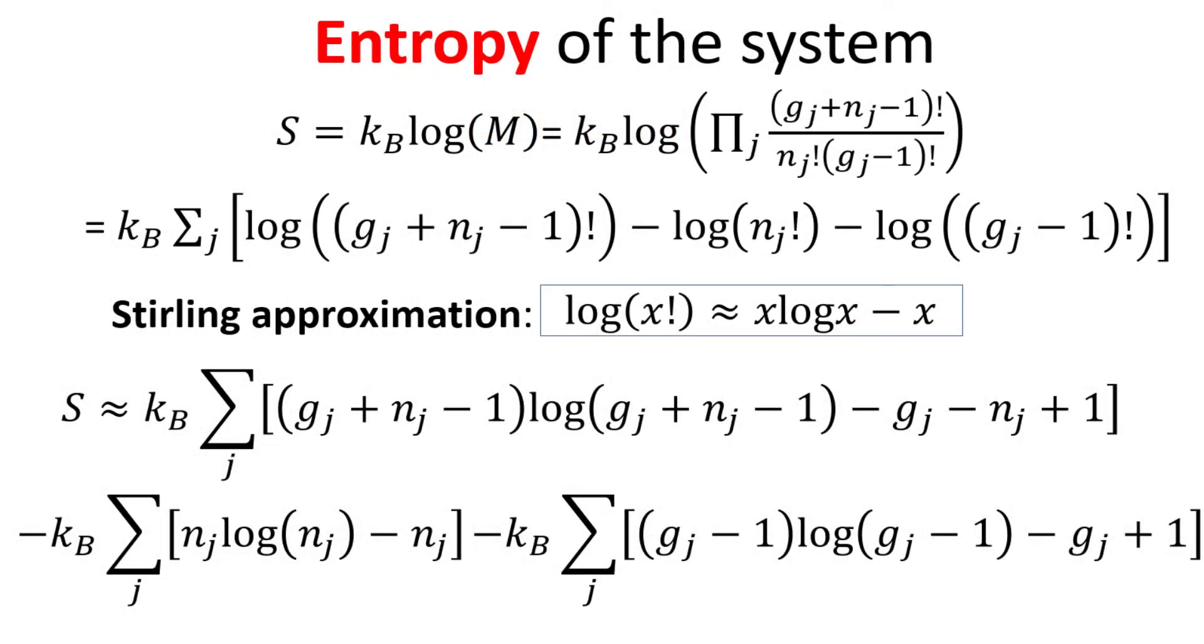Let's work out the entropy of the system using the Boltzmann definition of entropy. We substitute the multiplicity expression into the logarithm, which then allows us to write the product of the multiplicity of the different energy levels as a sum of logarithms.